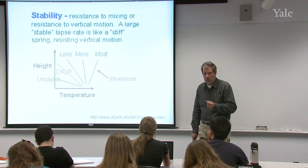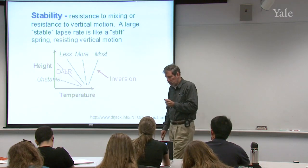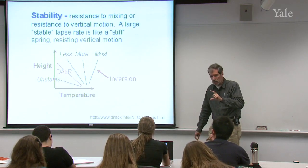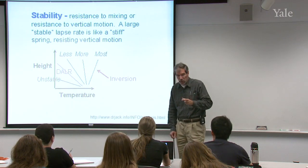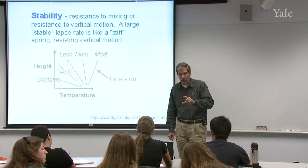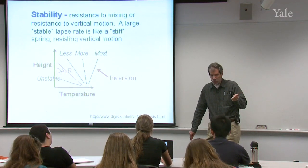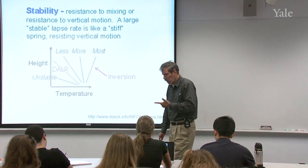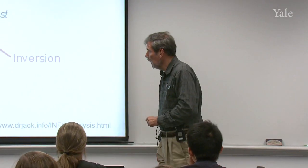Is the dry adiabatic lapse rate always 9.8? Yes. In the Earth's atmosphere, it's always 9.8. It turns out to be the ratio of the surface gravity, 9.81, to the heat capacity of constant pressure for air, which is 1,004. So as long as we're talking about planet Earth, the adiabatic lapse rate is always 9.8. The dry adiabatic lapse rate. And that would be 9.8 degrees Celsius per kilometer.